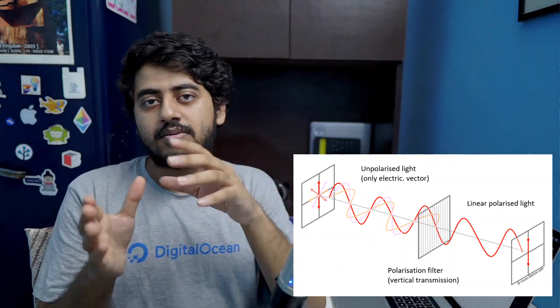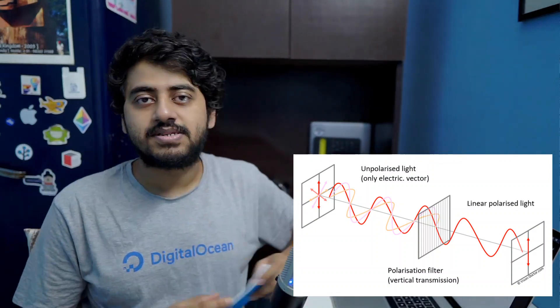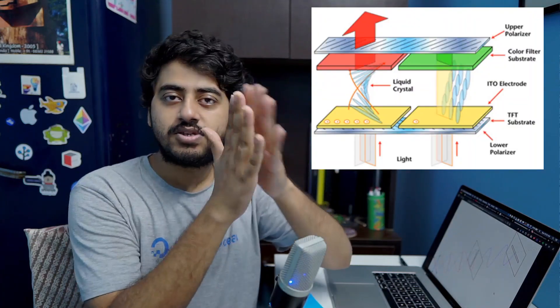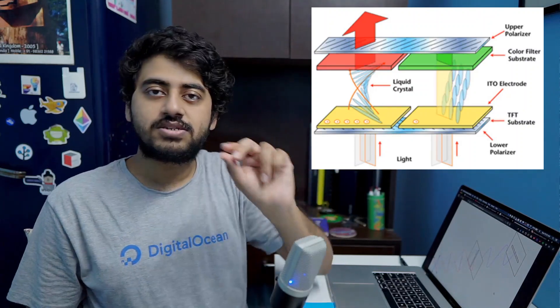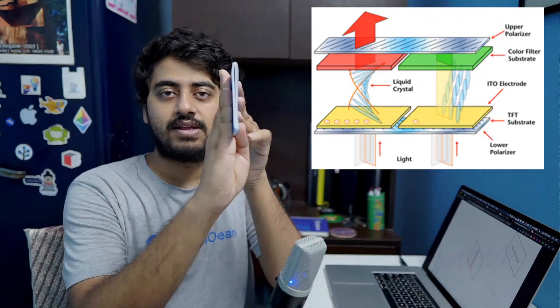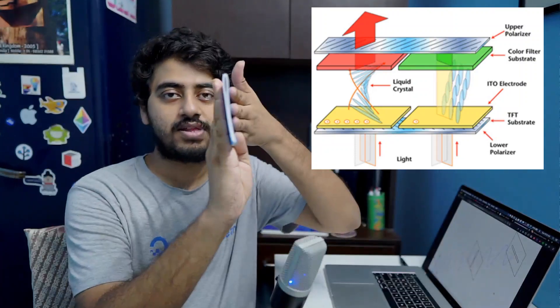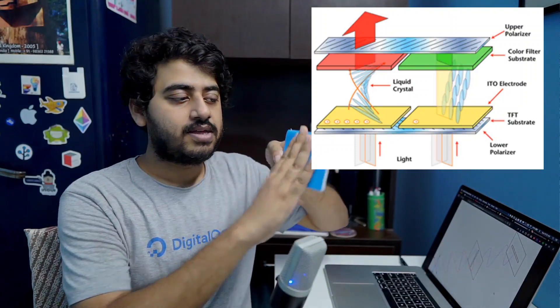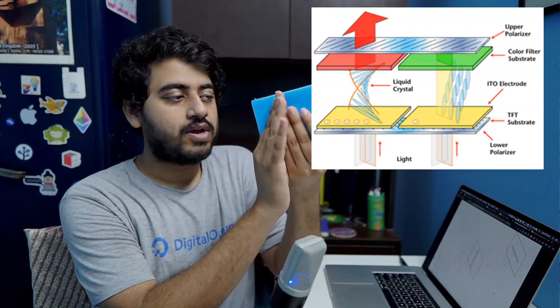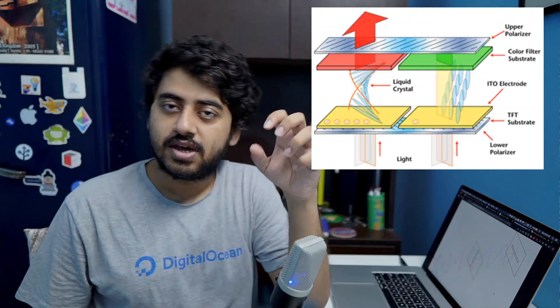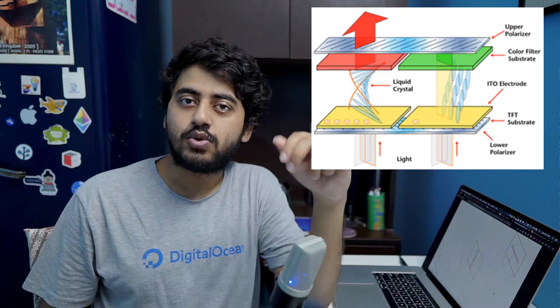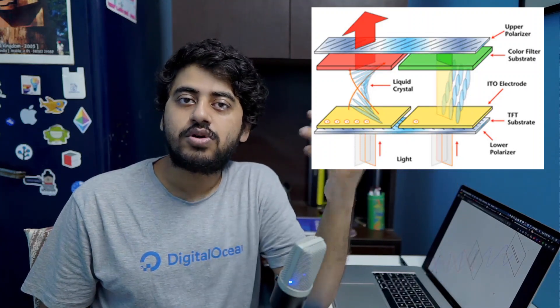In an LCD, there are two polarizers — one where the grills are vertical and one where the grills are horizontal. Between these two is your actual LCD with the crystals. So there's one polarizer, then the liquid crystal layer, then another polarizer. The light going through enters in a certain plane, and the liquid crystals twist the light they want to pass and don't twist the light they don't want to pass.